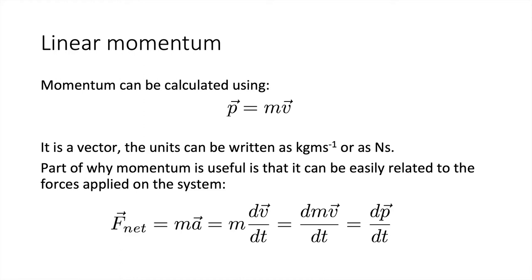This lecture we're going to start looking at linear momentum. Momentum can be calculated using the formula p equals m times v, where v is the velocity of the object and m is the mass. It's a vector, and the units can be written as kilogram metres per second or as Newton seconds. Newton seconds is faster to write. Part of why momentum is useful is that it can easily be related to the forces applied to the system.